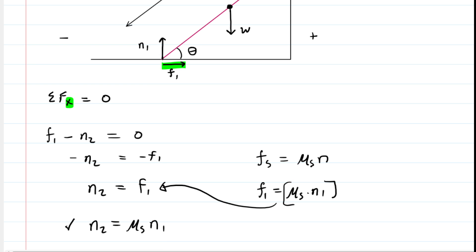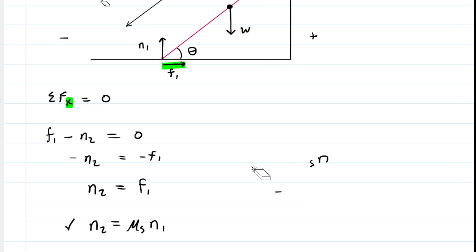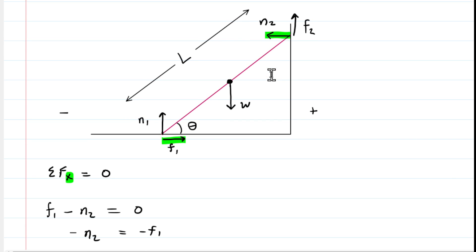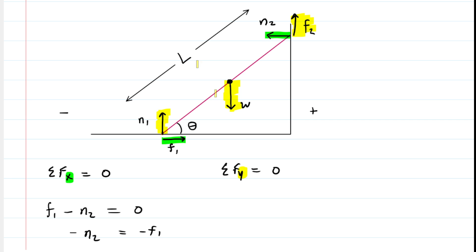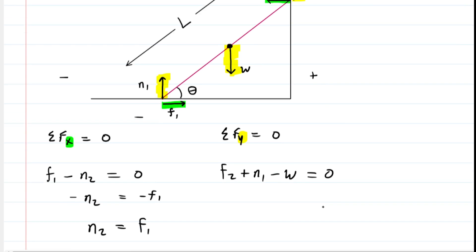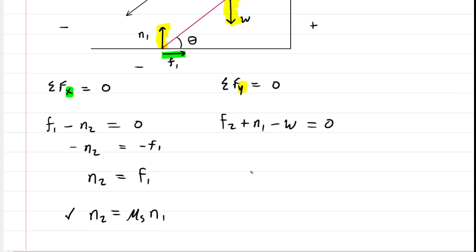Now let's apply Newton's second law in the y direction. The sum of the forces in y equals zero. There are three forces acting vertically. Assuming upward is positive and downward is negative, we have F2 plus N1 minus W equals zero. Isolating N1, we add W to the other side and subtract F2, giving us our expression for N1.